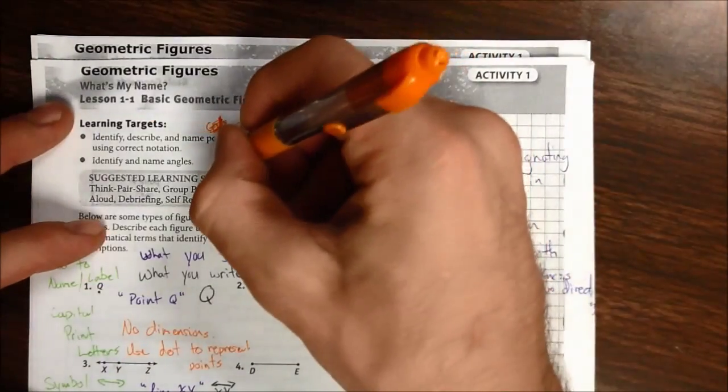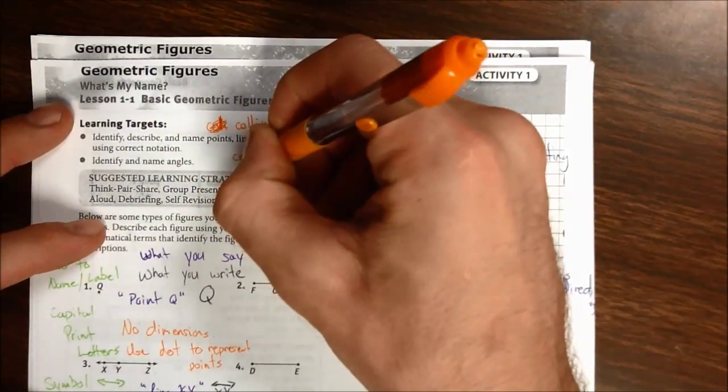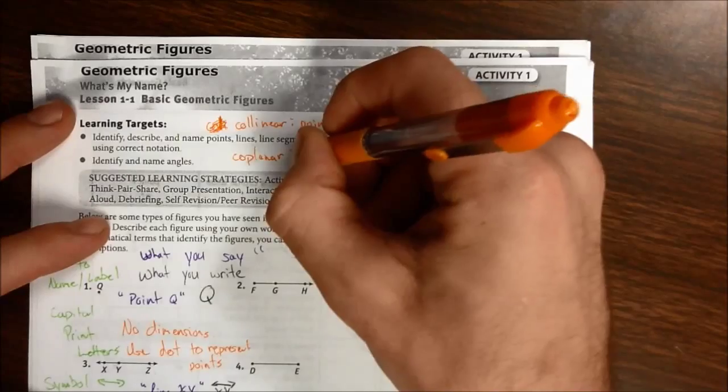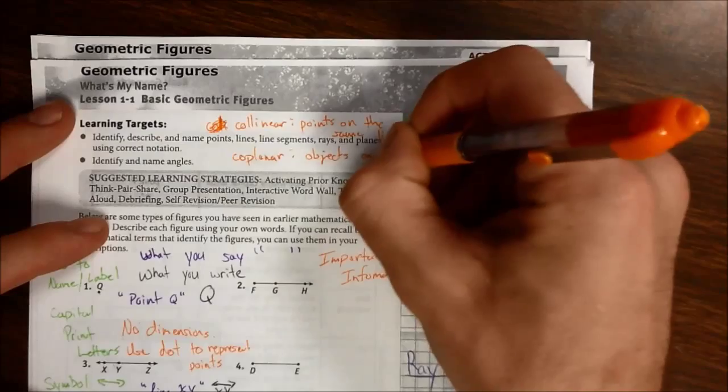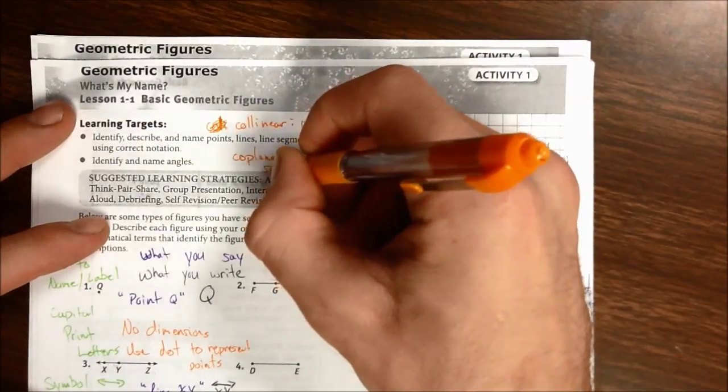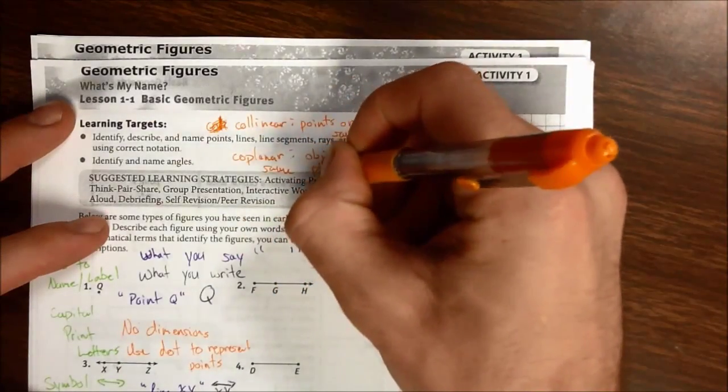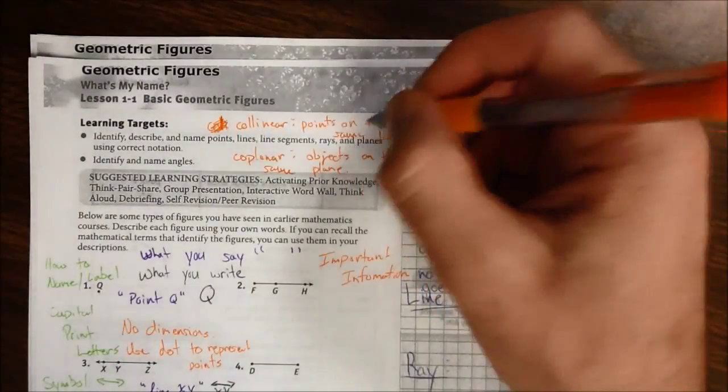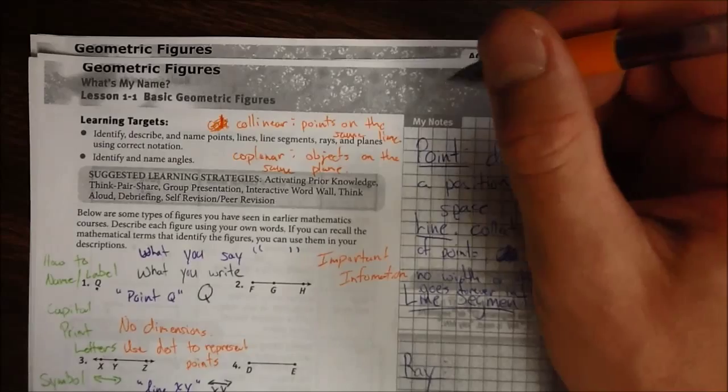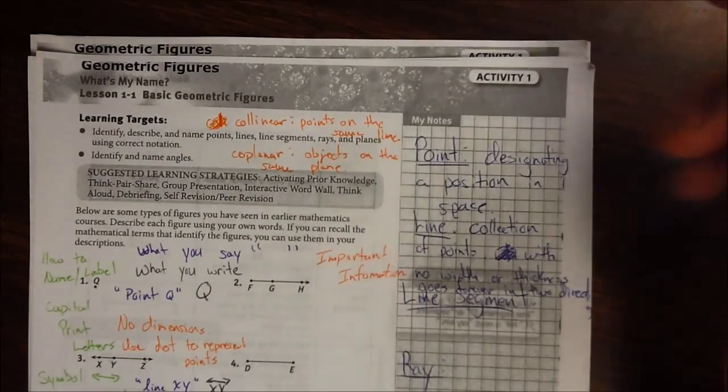We're going to get to it later, but there's also a term called coplanar. And that's objects or points on the same plane. Now, in class, you may hear me say this point is on the line, or I may say the point is in the line. There's no difference between those. I'm going to go back and forth, so don't let that confuse you.